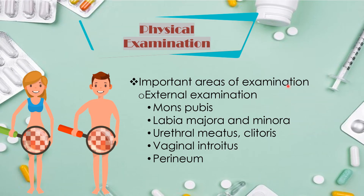After taking the health history, we confirm findings through physical examination. The important areas of examination include the external examination of the mons pubis, the labia majora and minora, the urethral meatus, the clitoris, the vaginal introitus, and the perineum.